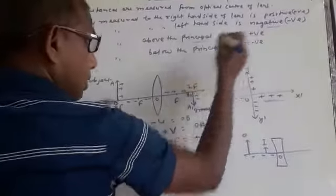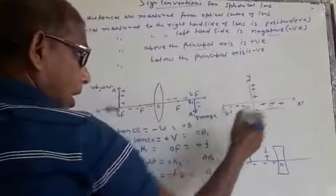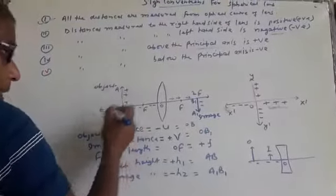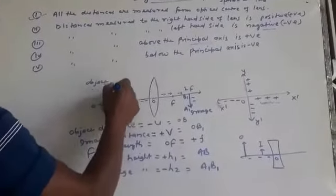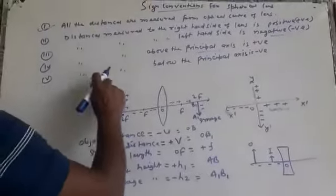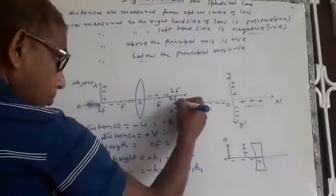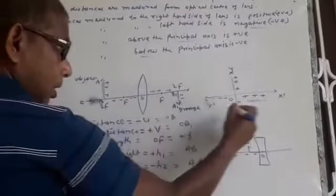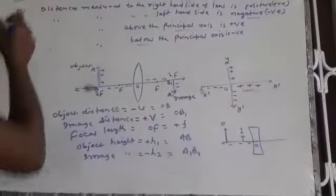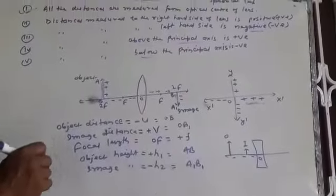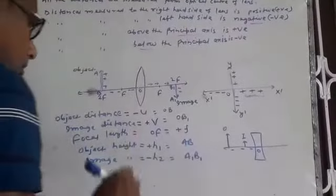Fourth convention: distances measured above the principal axis are positive. You are seeing in the diagram here, it is also positive. Fifth convention: distances measured below the principal axis are negative. So we have to keep all these sign conventions in memory to solve the numerical questions.